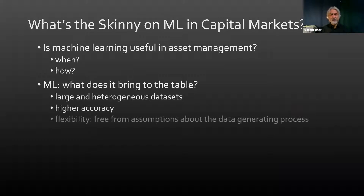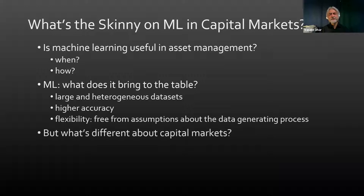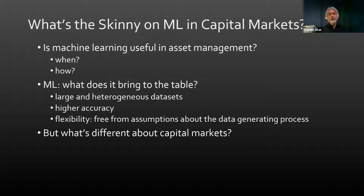Is machine learning useful in asset management? The answer is yes, but the real question is when and how. What does machine learning bring to the table? It brings the ability to deal with large and heterogeneous data sets that traditional methods are less well suited for. It gives us potentially higher accuracy through the flexibility it provides in modeling — allowing a much more facile way of modeling non-linearities, freeing us from the assumptions about the data generating process endemic to traditional statistical methods.